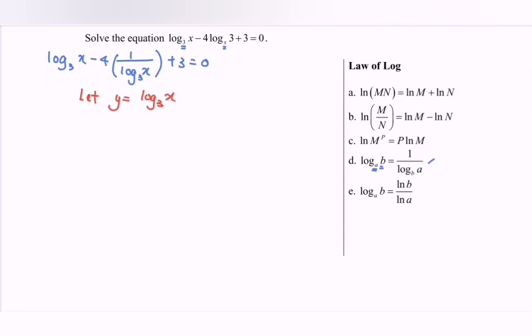From here we have y minus 4 over y plus 3 equals 0. So we have y squared plus 3y minus 4 equals 0. So y plus 4, y minus 1 equals 0.